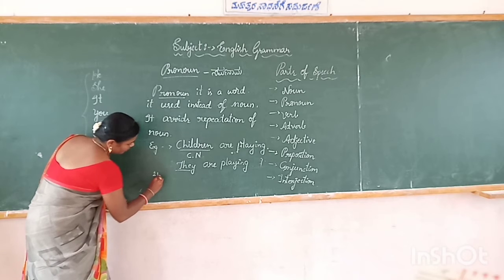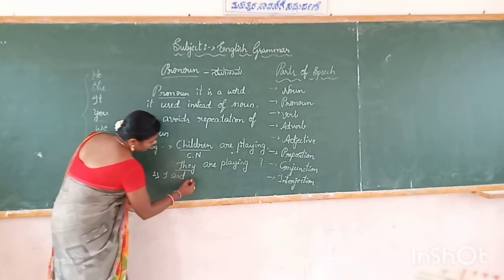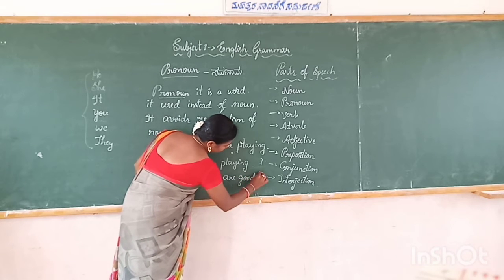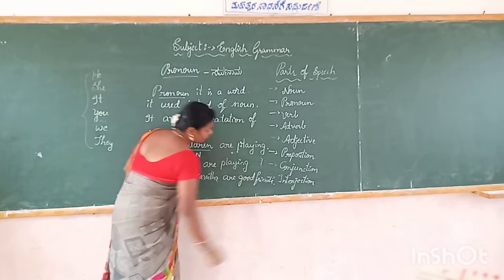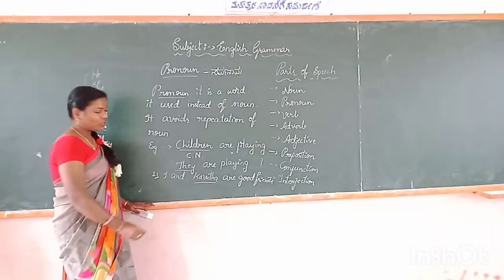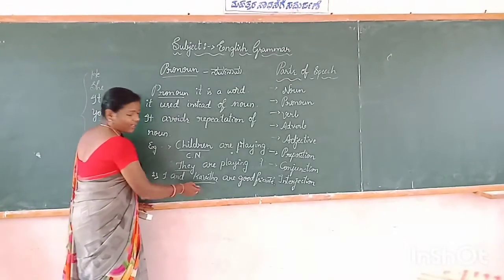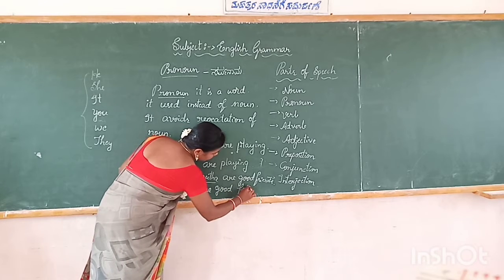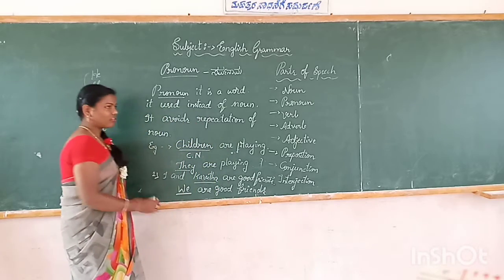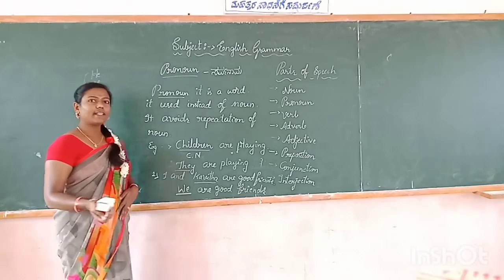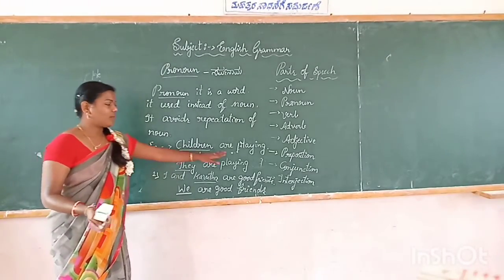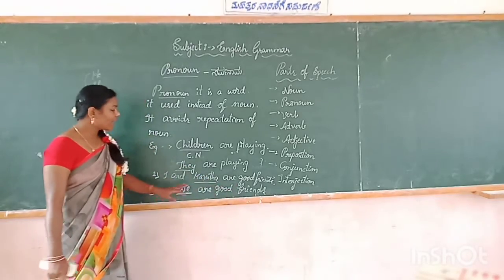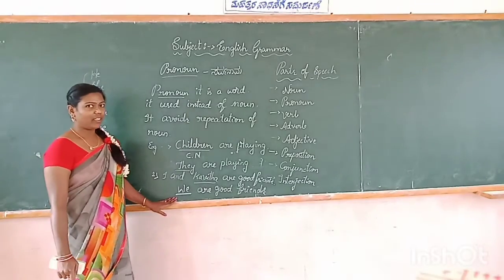Next one: I and Kavita are good friends. In this sentence, Kavita is a noun. Instead of 'I and Kavita', we use 'we'. We are good friends. So dear student, pronoun means it is a word used instead of noun. It avoids the repetition of the noun. Children are playing — children is a common noun, instead of children we use 'they'. I and Kavita are good friends — instead of I and Kavita, we use 'we'.